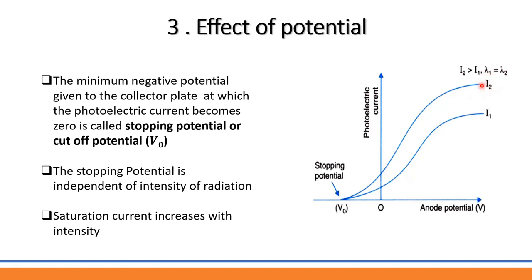For the same frequency but different intensities i1 and i2, the stopping potential remains the same. So stopping potential is independent of the intensity of radiation. The saturation current — the maximum current — increases with intensity.